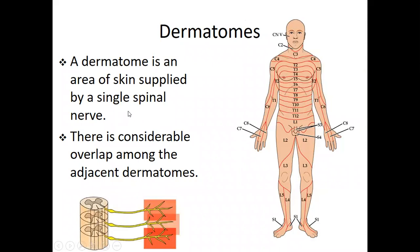Now we're going to focus on our topic: the dermatome. A dermatome is an area of skin supplied by a single spinal nerve. However, there is considerable overlap among adjacent dermatomes, as you can see in the diagram.